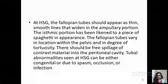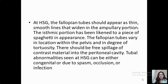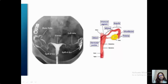At HSG, fallopian tubes should appear as thin smooth lines; they should widen in the ampullary portion. The isthmic portion is likened to a spaghetti in appearance. The fallopian tubes vary in location within the pelvis and vary in their tortuosity. There should be free spillage of contrast material into the peritoneal cavity. Tubal abnormalities can be either due to congenital causes, spasm, occlusion, or infection. This is a normal hysterosalpingogram showing the four parts of the tube — cornua, isthmus, ampulla, and fimbria — and the spillage pattern outlining gut loops.